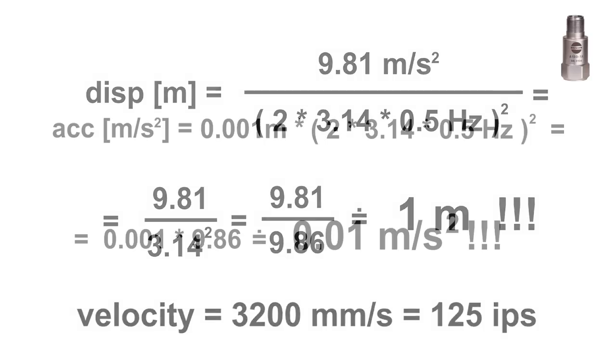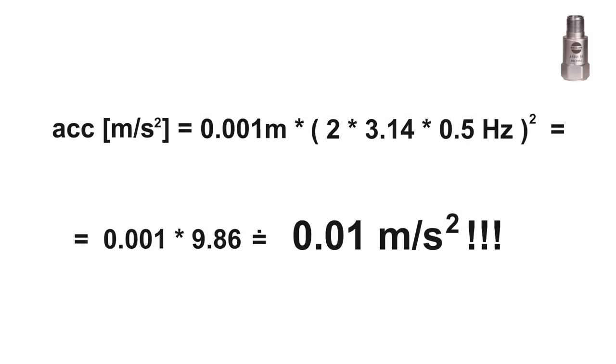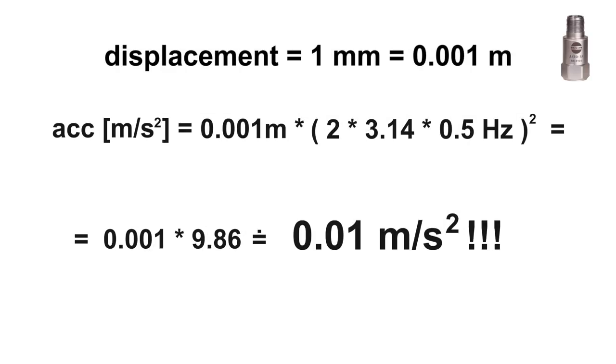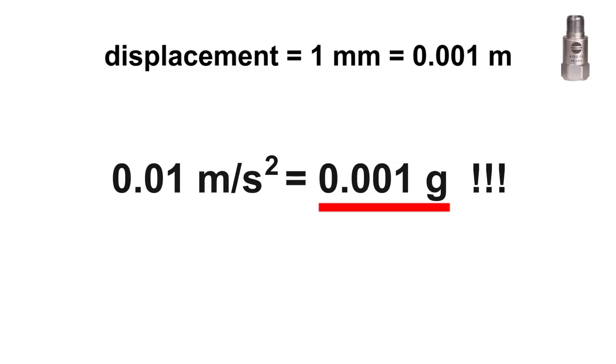I suppose the displacement level is 1 mm. The corresponding acceleration level is 0.01 meters per square second. It is 0.001 g. It is one thousandth of g.